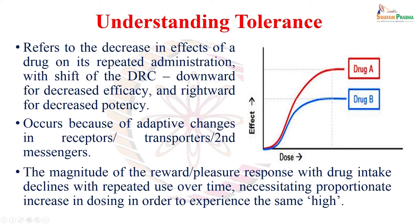Although two drugs A and B are shown in the diagram, let us assume it is the same drug in two settings: prior to chronic or repeated use, and after chronic use. What has happened? Its efficacy has been reduced and its potency has also been reduced because the curve has shifted towards the right. Even with an increased dose, you do not get the same effect you used to get before chronic use.